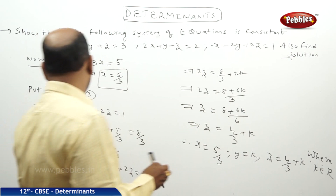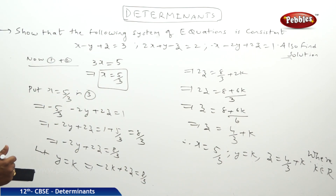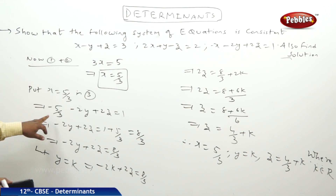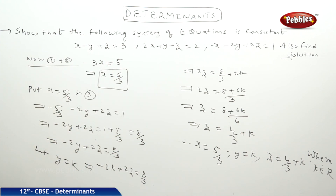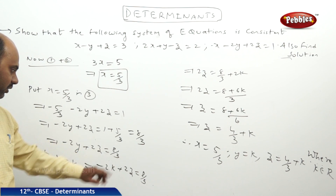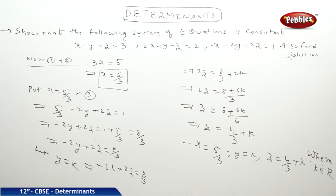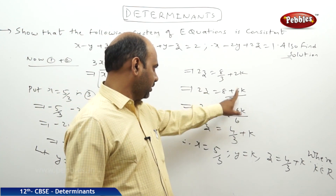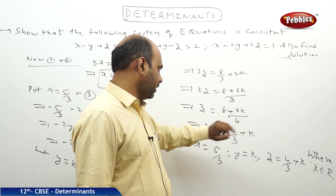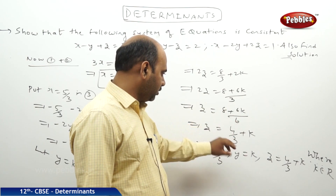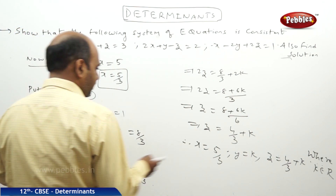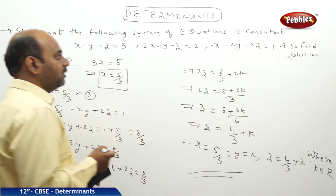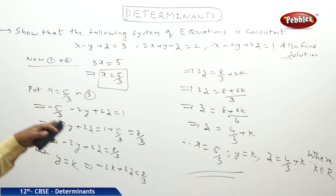Where k belongs to ℝ. So the solution is x = 5/3, y = k, z = 4/3 + k, where k ∈ ℝ. This is the pattern where the system is consistent and possesses infinitely many solutions.